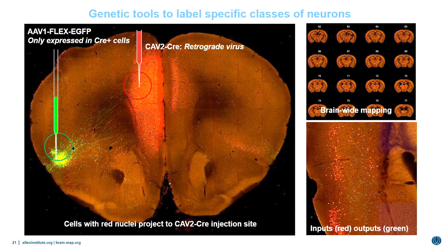We are using canine adenovirus Cre and Cre-dependent AAV strategy to label projection neurons in a particular area within DMN regions defined by their targets. Using a CAV2-Cre virus — a retrogradely transported virus that takes Cre back to all input areas — we inject Cre-dependent AAV expressing EGFP to label those projection neurons and then map their full brain-wide projections. We'll do this for all different combinations of regions in and outside of the default mode network.